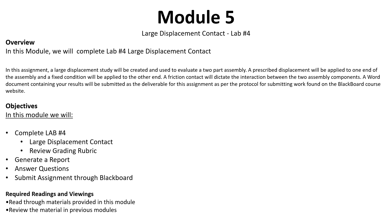Now let's look at the objectives for module number five. You will be completing lab number four dealing with large displacement contact. Before you begin, I highly encourage you to read through the grading rubric and go through all the material from this module and previous modules, so you understand exactly what we're asking for in the report. Once completed, generate a report — again as a Word or PDF, I'd recommend PDF format for uploading — answer any questions related to the lab, and submit through Blackboard the same way you have for labs one, two, and three.